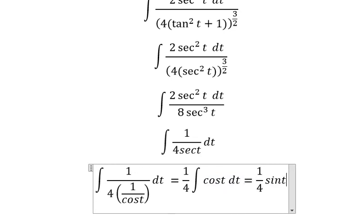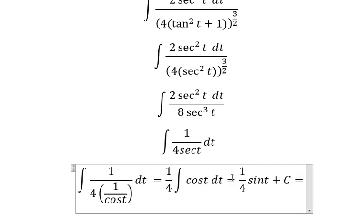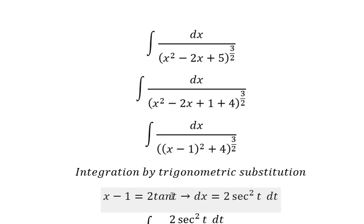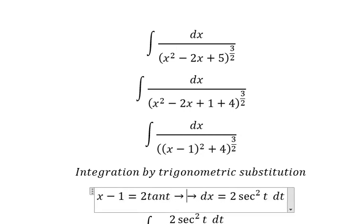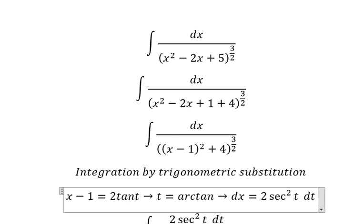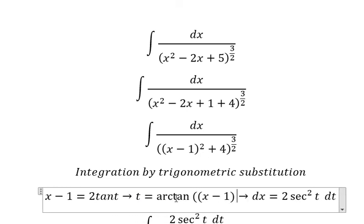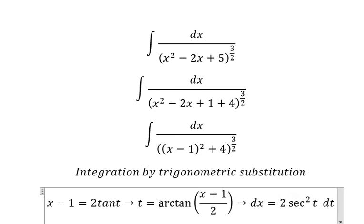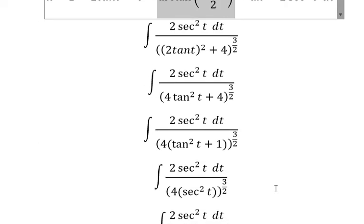The integral of cos t gives sin t plus c. Now we solve for t by dividing both sides by 2, and we get t equals arctan of x minus 1 over 2. So we put this back into our answer.